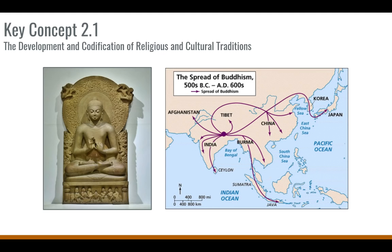We also have some new belief systems that develop in this time period — new cultural traditions which will emerge and spread. These include Buddhism, Confucianism, Taoism, and Christianity. The core beliefs of Buddhism are about desire, suffering, and the search for enlightenment, and this was traced back to Siddhartha Gautama, or the historic Buddha. These teachings were recorded by his followers.